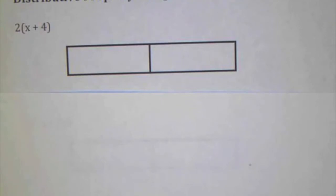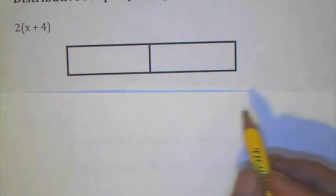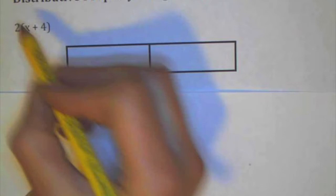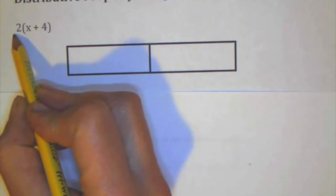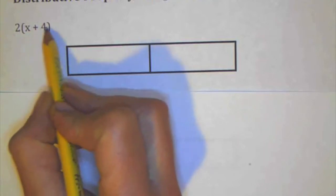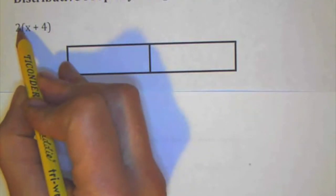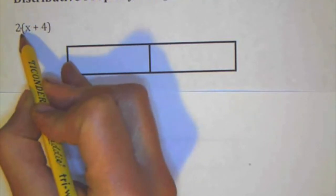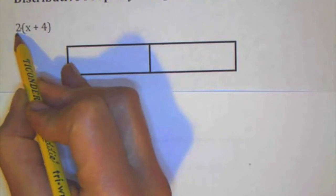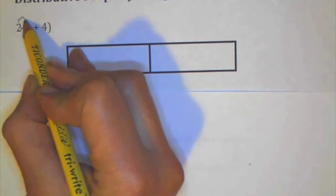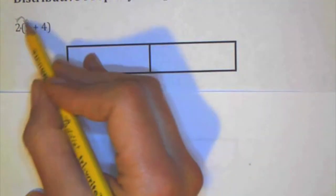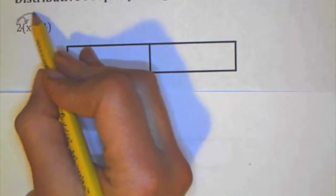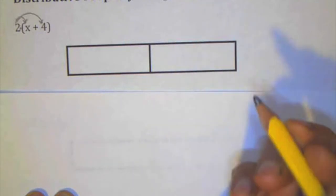This video is on how to use generic rectangles to help you with the distributive property. Now one strategy is you need to know that this is 2 times this group of terms. There's actually a hidden or implied multiplication symbol between the 2 and the parentheses. So one method is to use arrows saying I'm going to multiply 2 times the x and 2 times the plus 4.